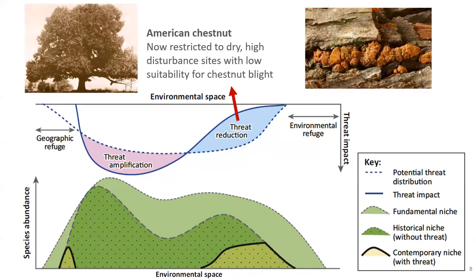A non-frog example is the decline of chestnut trees due to introduced chestnut blight in North America. In the hardwood forest, chestnut trees were once one of the most common species; this introduced fungus caused the death of billions of trees. But the species didn't become extinct—it persists in reasonable abundance in some dry, high-disturbance sites. That's because dry, high-disturbance environments are unsuitable for the fungal pathogen, which prefers cooler, more enclosed canopy sites. We see this environmentally selective pattern of decline where the threat is widespread, but its impact is more severe under certain environmental characteristics.